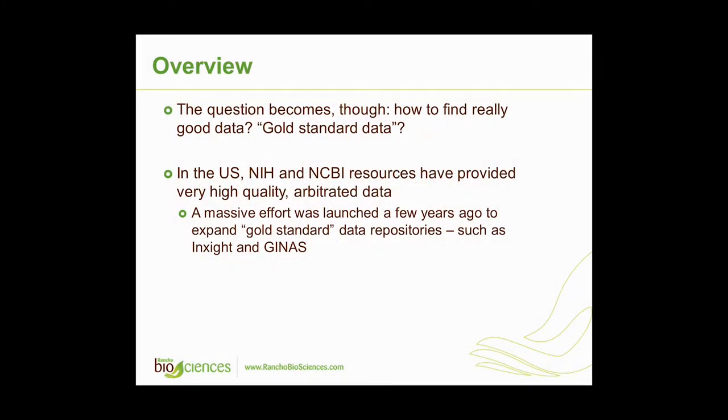NIH has launched a massive effort to expand this collection of gold standard data. Several projects are ongoing. One is called Genus, meant mostly for regulatory people. It allows you to correctly identify all ingredients in any consumable product, down to dyes and anti-caking agents, and find toxicity data related to those agents. This requirement is becoming mandatory in Europe very soon.